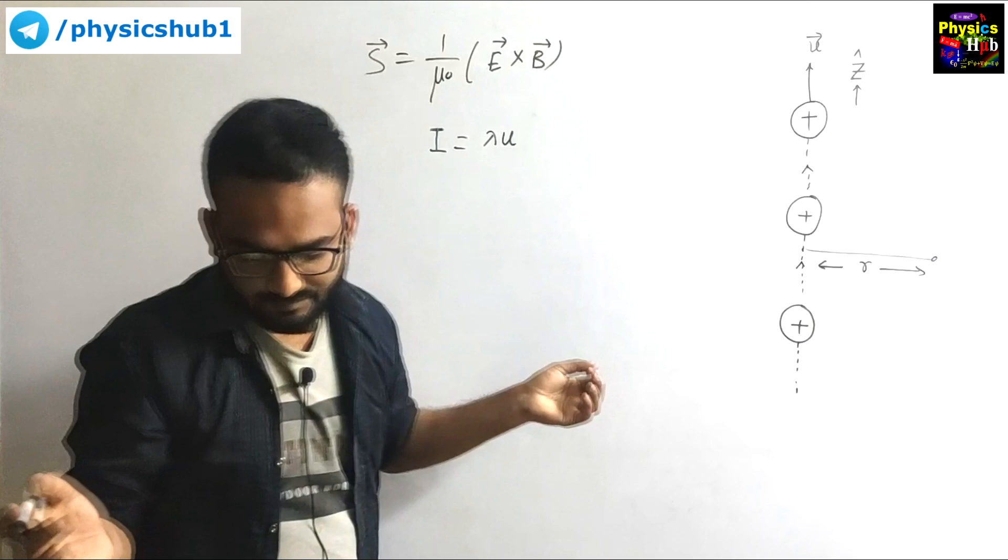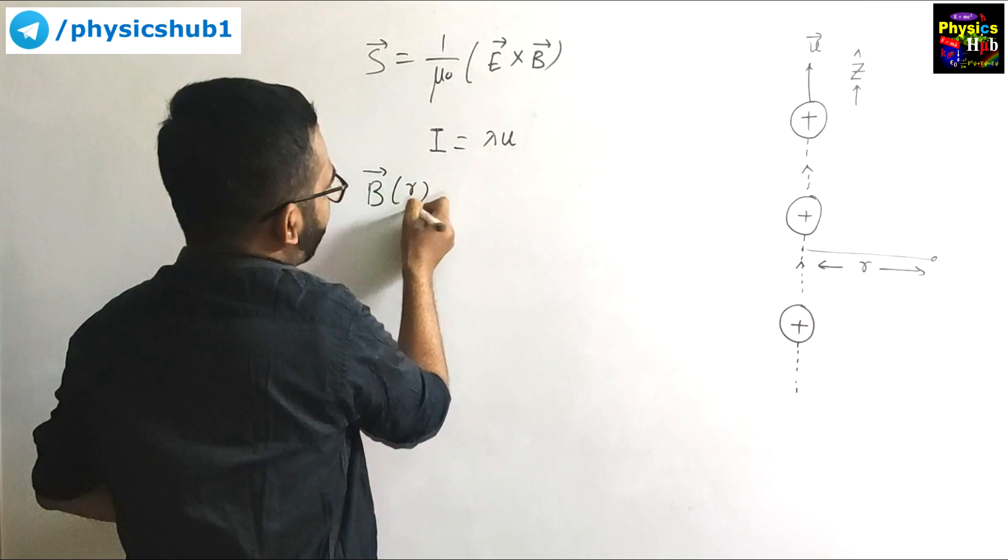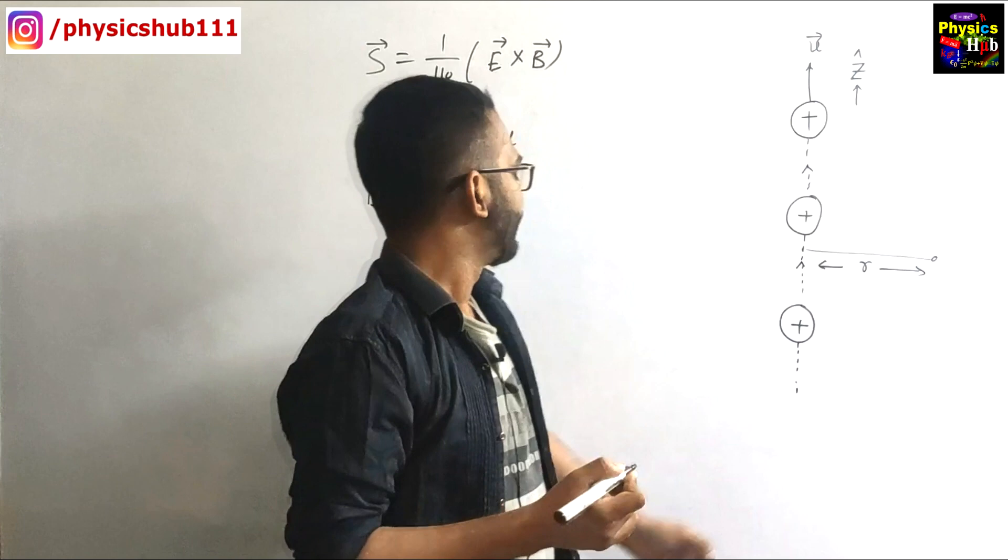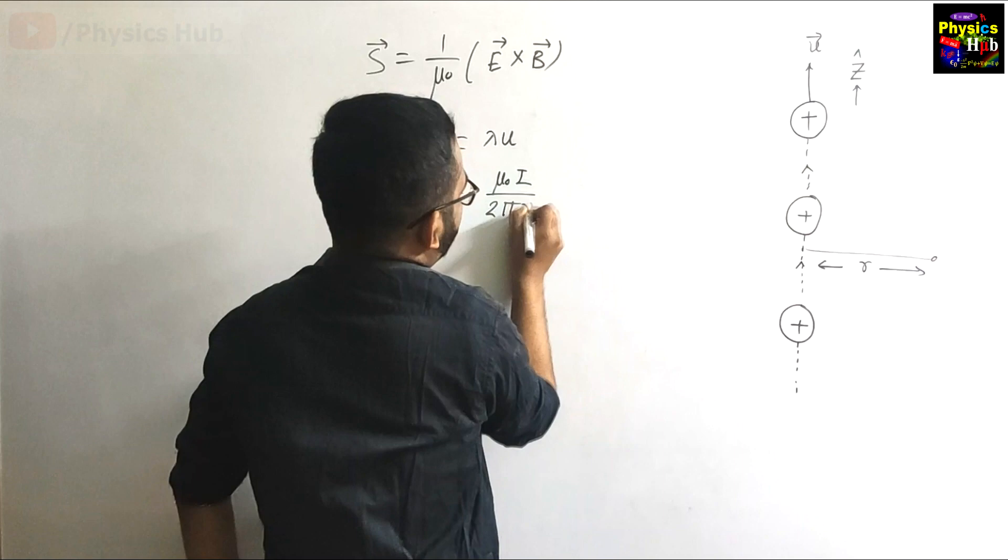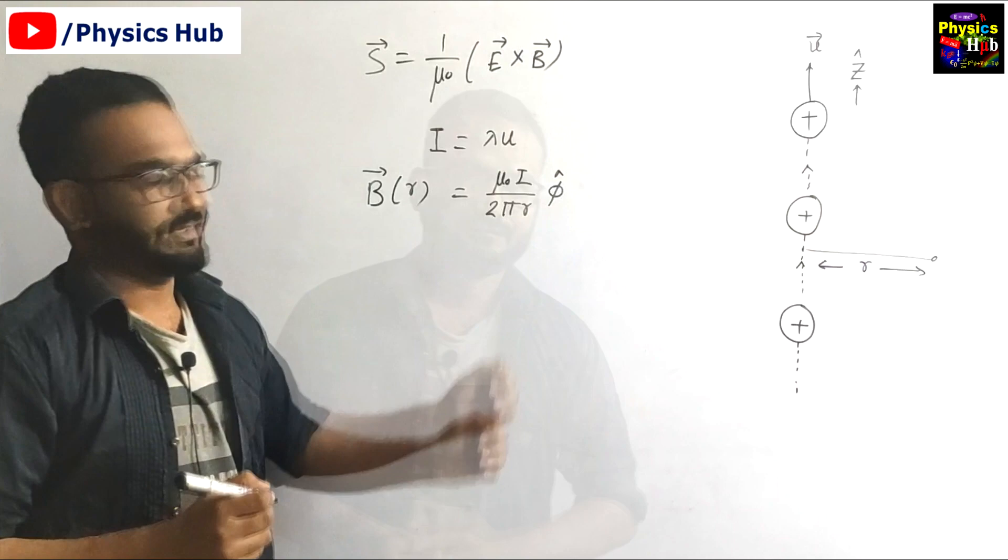Now what is the magnetic field at some point r from an infinite wire? B of r equals to mu naught I by 2 pi r and that direction is phi cap. So mu naught I by 2 pi r phi cap.